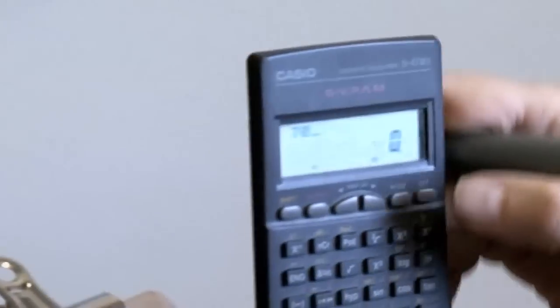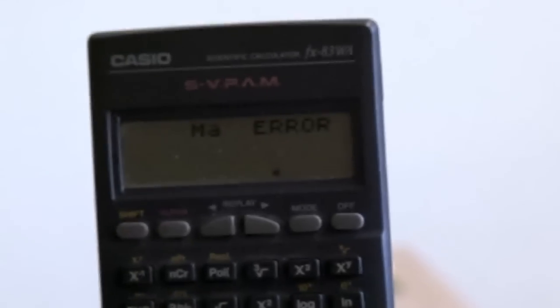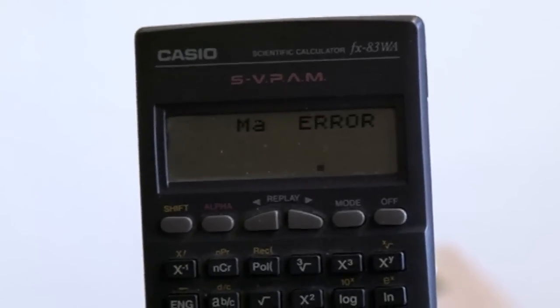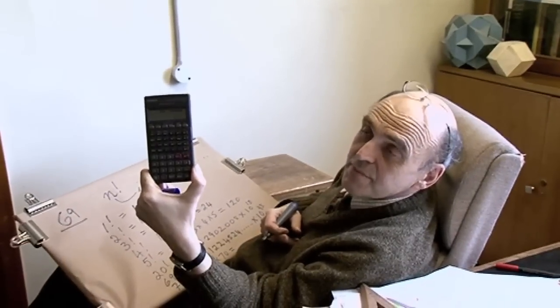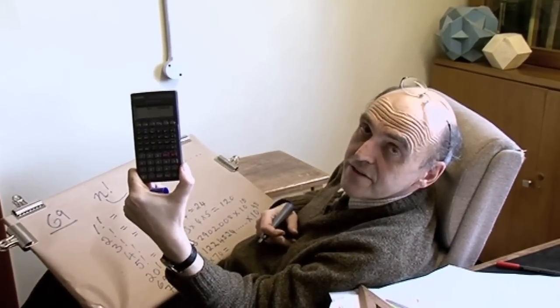So I'll put in 70 and then try to work out the factorial. What do I get? Error. So I get error, which means the numbers become too big for my calculator.